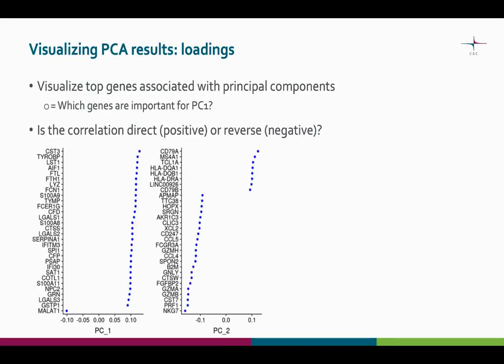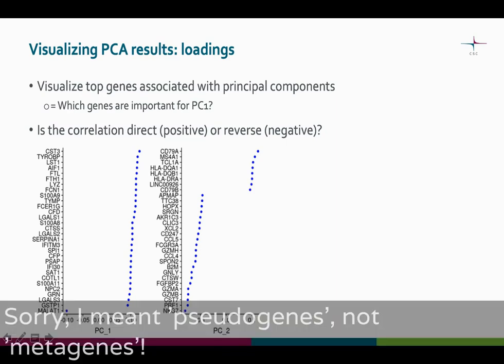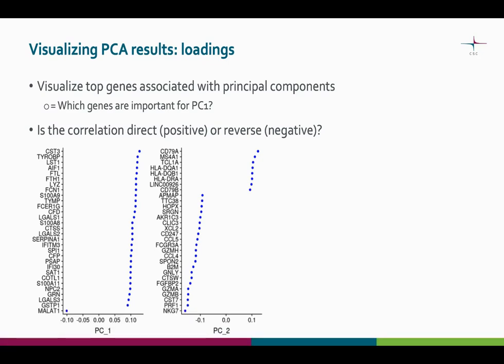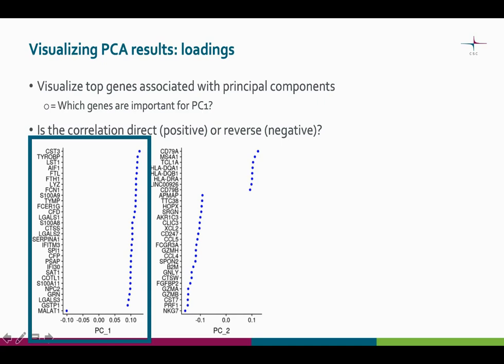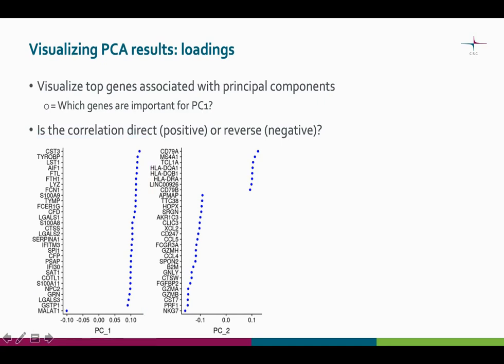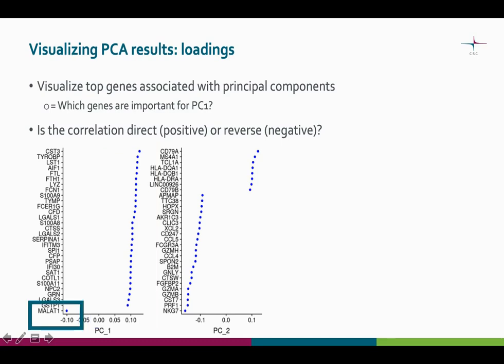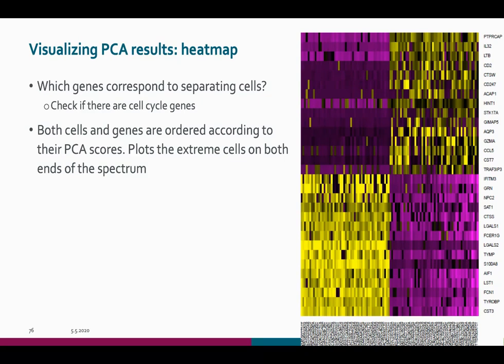We mentioned earlier that principal components can be considered as metagenes. It's of interest to know which genes are present in each principal component. This can be visualized in a loading plot, which lists the top genes associated with each principal component. The correlation between the gene and the principal component can be direct, meaning positive, or reverse, meaning negative.